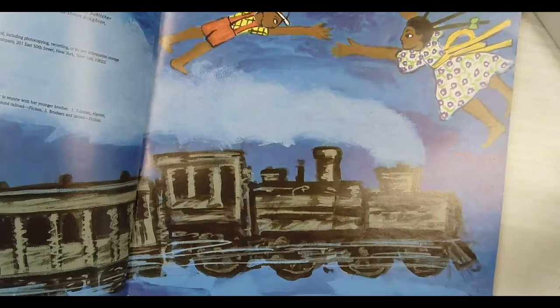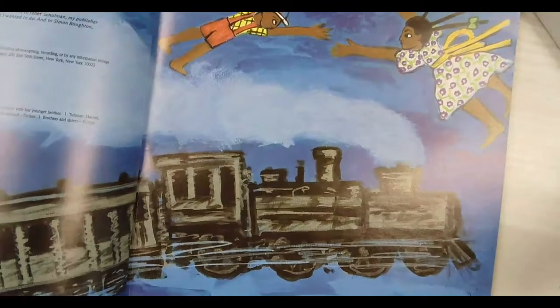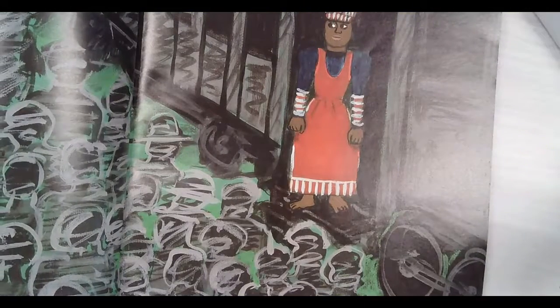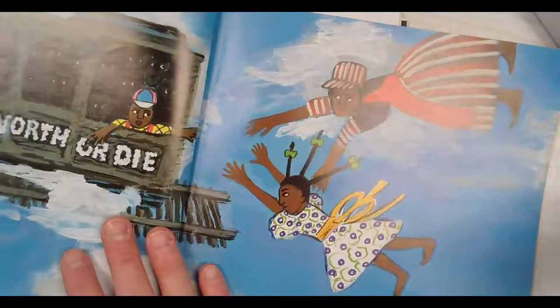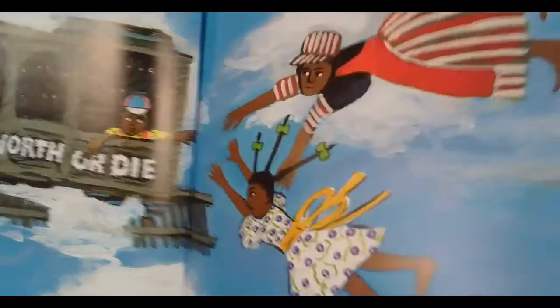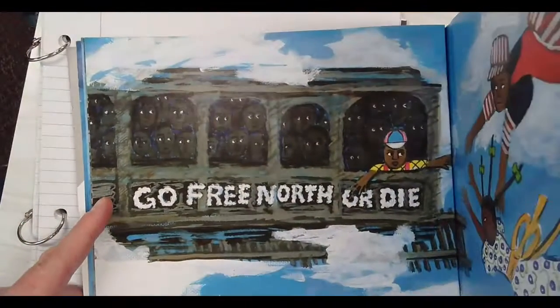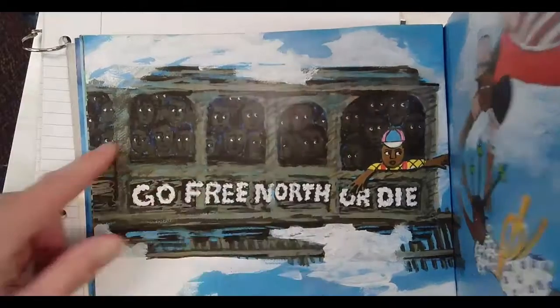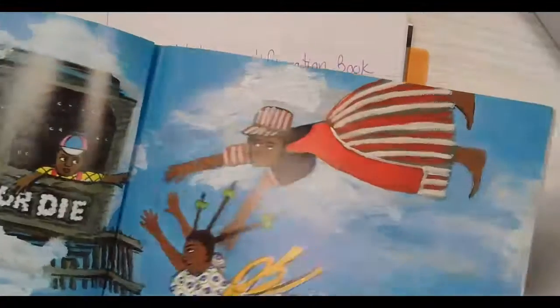We don't generally think about these kinds of pictures in an informational book. This is not typically what we think of. Look at this illustration that says go free north or die, there's a bunch of slave faces behind the kid. This is an informational book, but it doesn't really look like an informational book, does it?